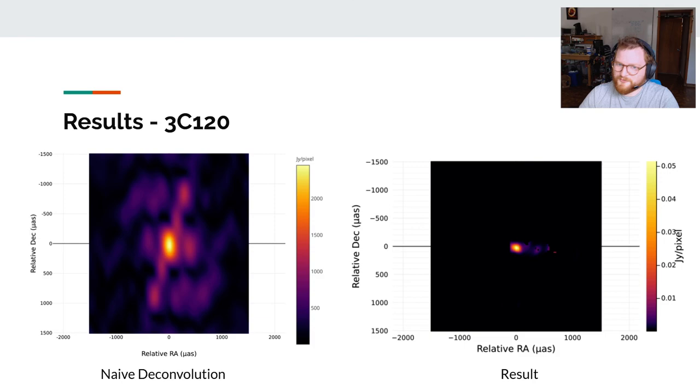And finally, some real data of 3C120, which is this radio jet, which doesn't look as good as the data online. But again, this is a naive implementation, and it was pretty good, and it's pretty performant. So yeah, all in all, I'm actually pretty happy with how this all turned out.